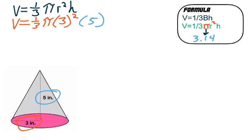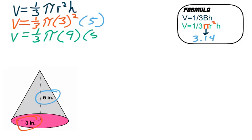The order matters a bit. Always start with the radius squared: 3 squared is 3 times 3, which is 9. Keep nine in parentheses, then we still have times five. After squaring the radius, you can multiply 9 times 5, or you could use number sense and take one-third of 9 first — one-third of 9 is 3 — then multiply 3 times 5 and go from there. I'll multiply first.